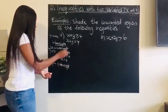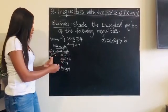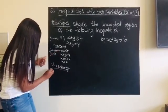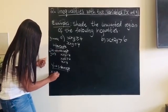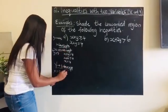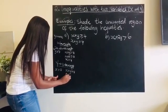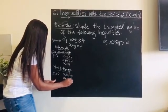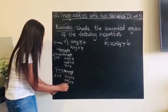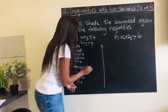For the y-intercept, we do the same thing but this time we let x equal to zero. If we let x be zero in this equation, we have zero plus y equal to four. Taking out the zero, I have y equal to four. Now I have an idea of how to label my axes.